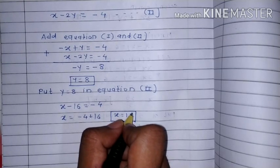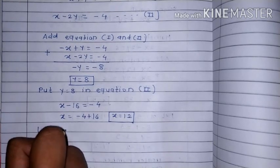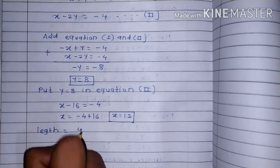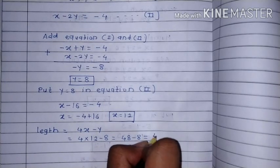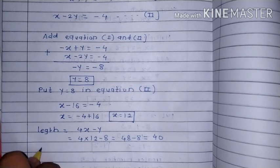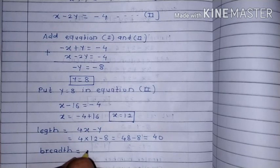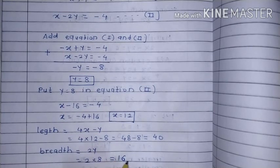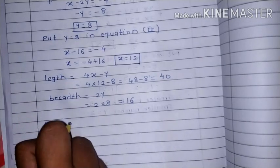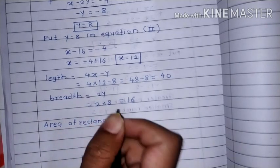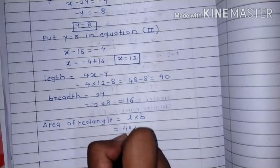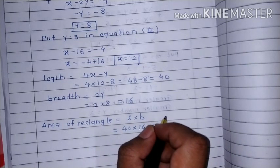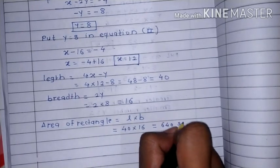Now we calculate perimeter and area. Length is equal to 4x minus y, that is 4 times 12 minus 8, equal to 48 minus 8, equal to 40. Breadth is equal to 2y, that is 2 times 8, equal to 16. Area of rectangle is equal to l into b, equal to 40 into 16, equal to 640 square units.